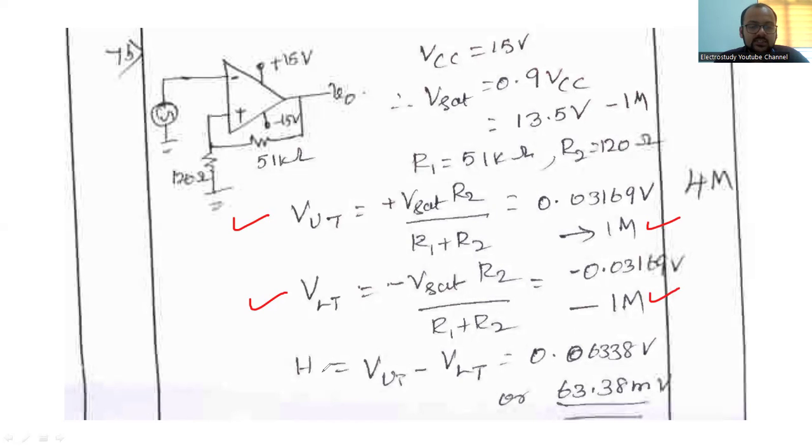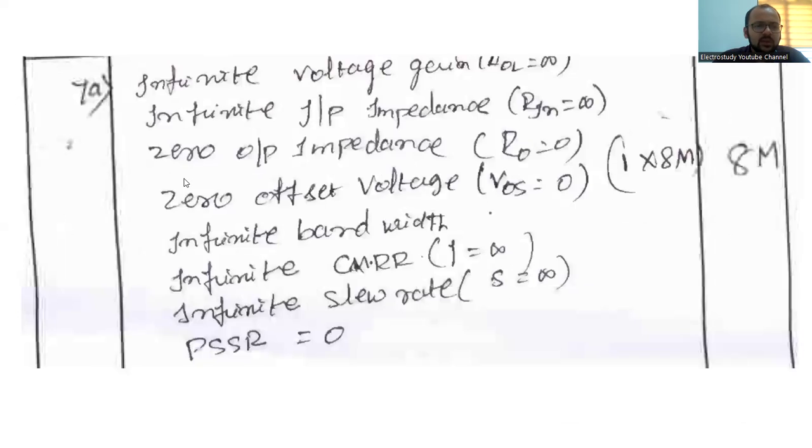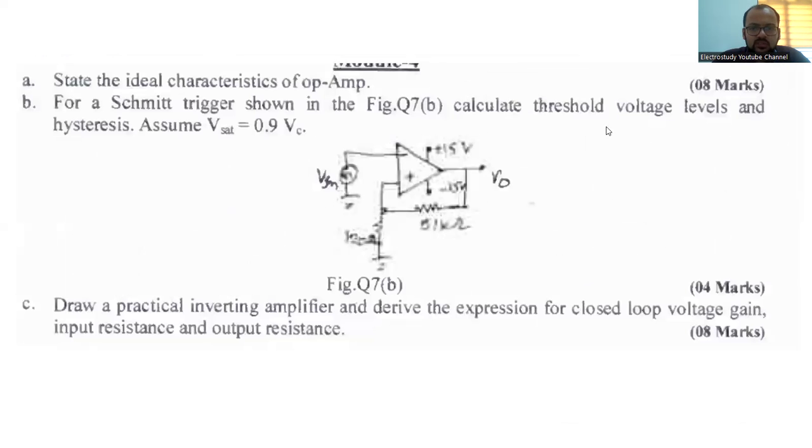If you calculate upper and lower threshold, you will be getting one mark each. Then hysteresis, that is actually the difference between upper threshold and lower threshold. If you calculate, you will be getting 63.38 millivolt. These are the things you will be obtaining from the calculation. It is very simple question only. Hysteresis we compute, upper and lower threshold we calculate, then difference. The difference will be the hysteresis actually.